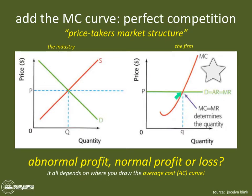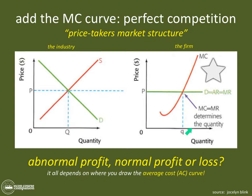If this is 10 units of output and we go down to 9, we find that the cost of making that unit of output is less than what they can get in the market for it. So they will make money on that unit because their costs are lower than the revenue they would earn.